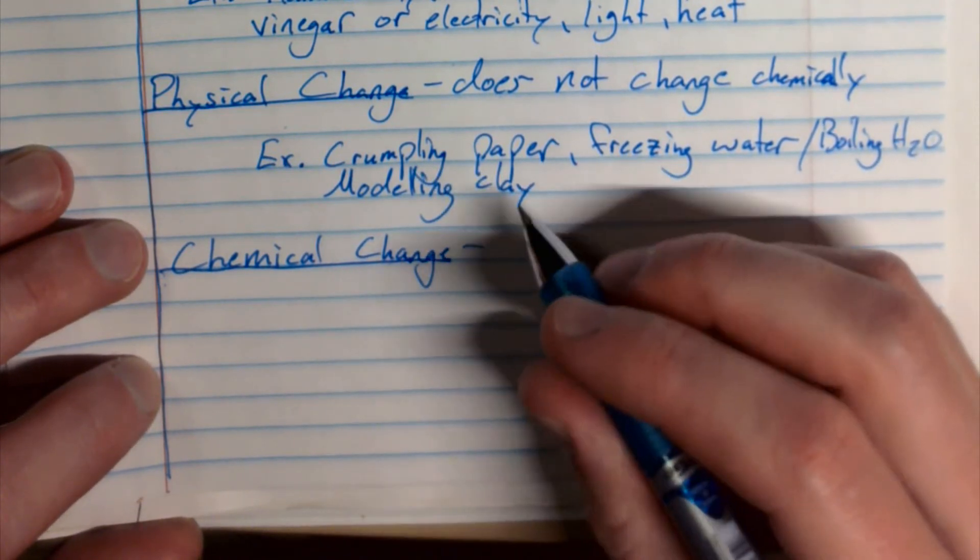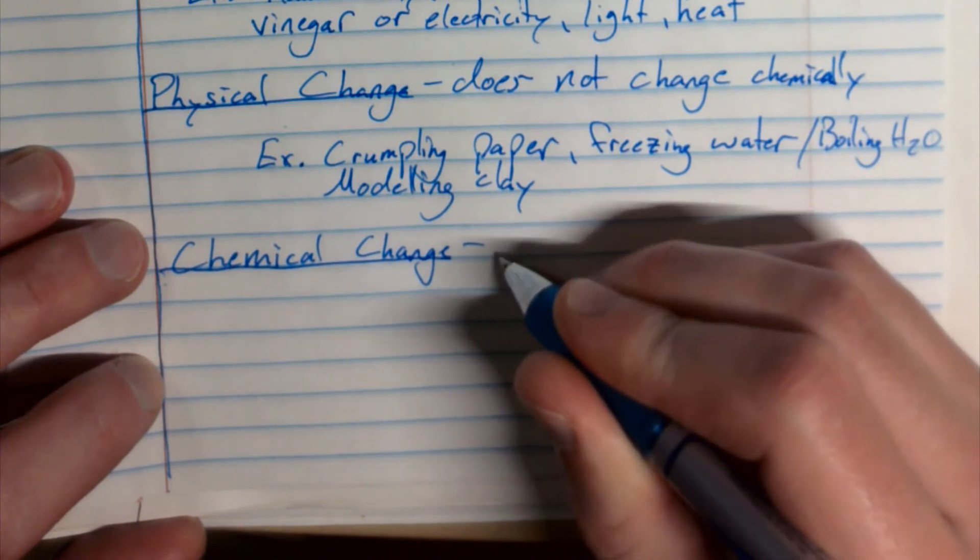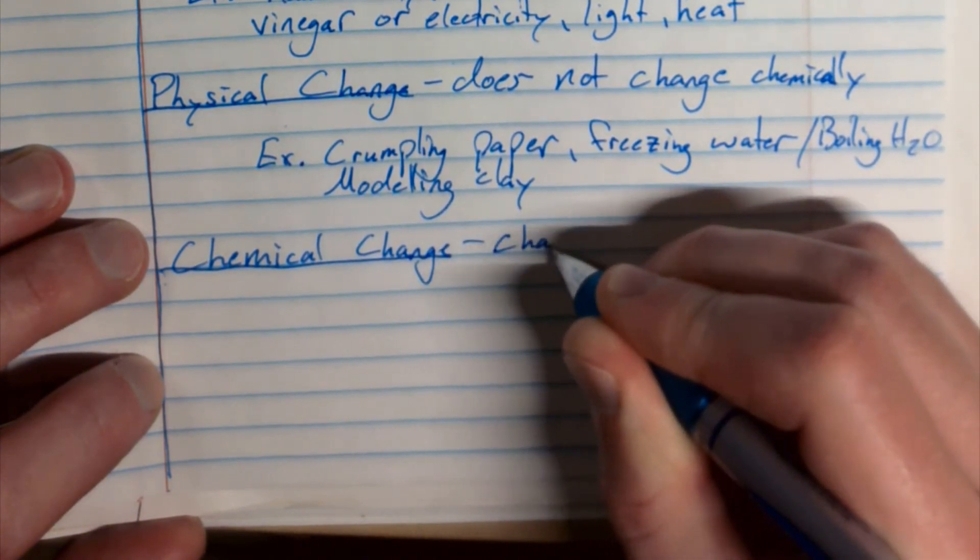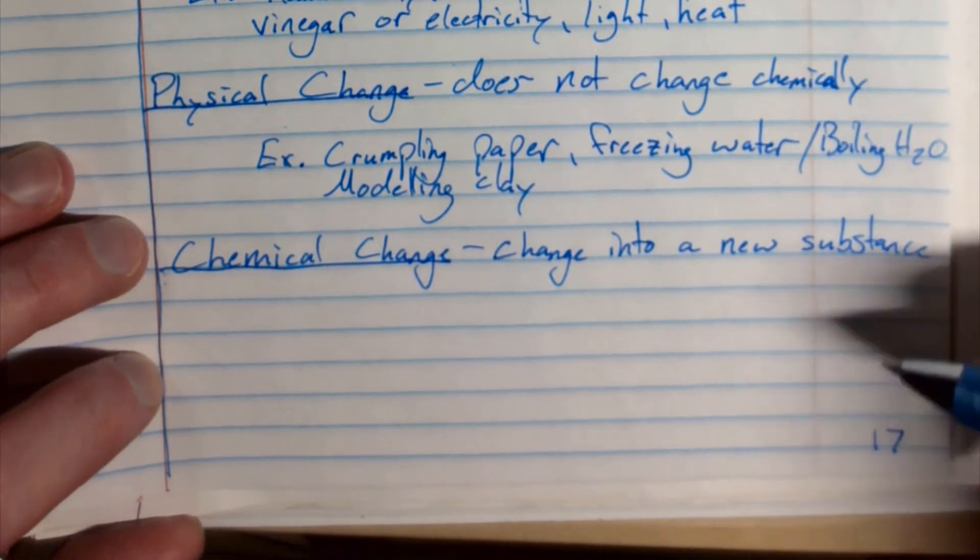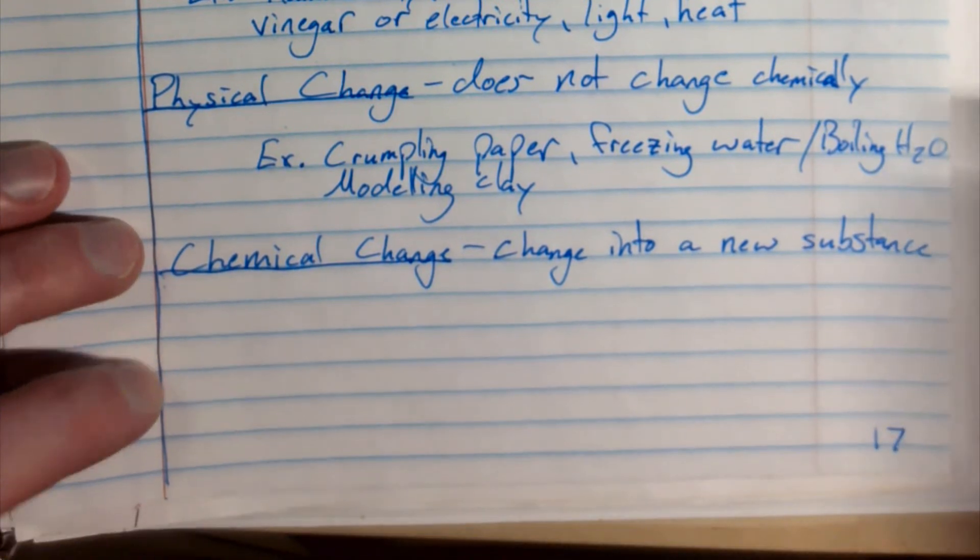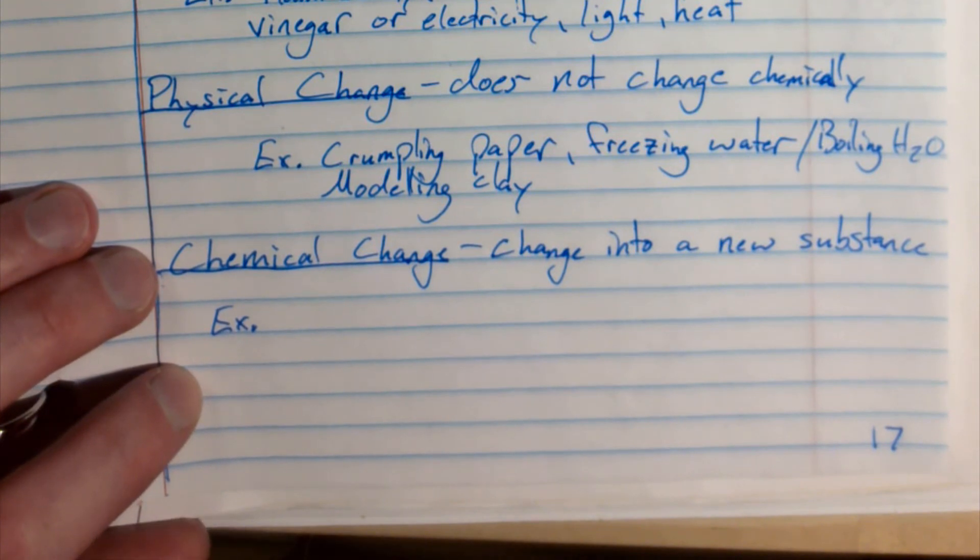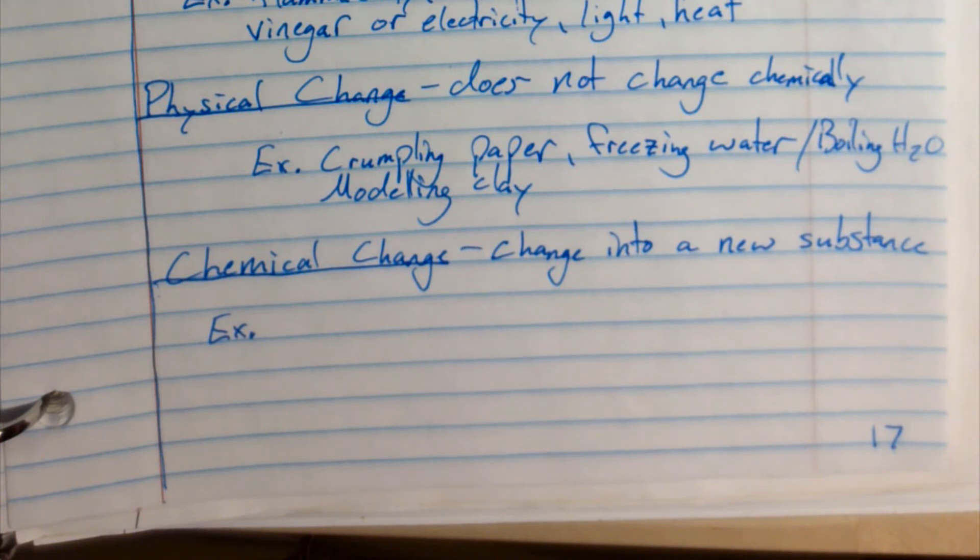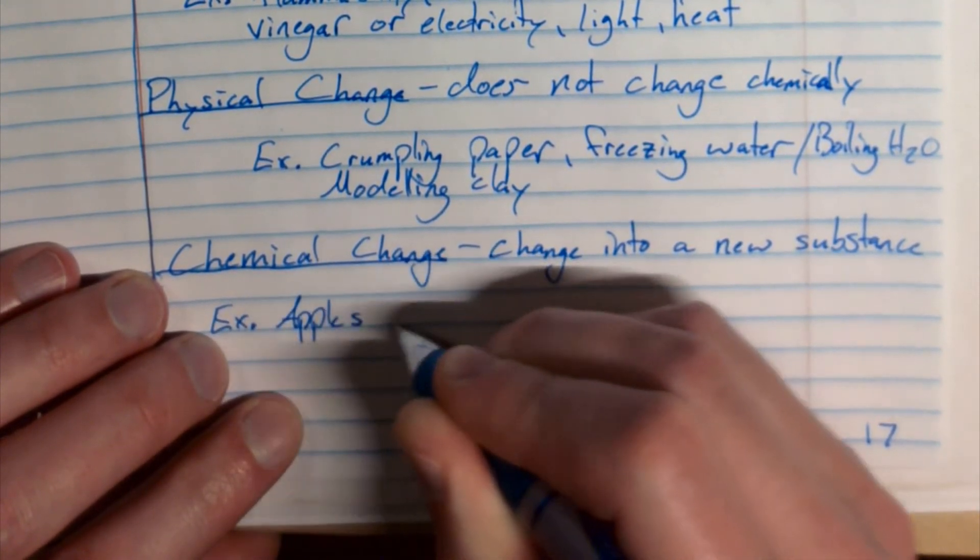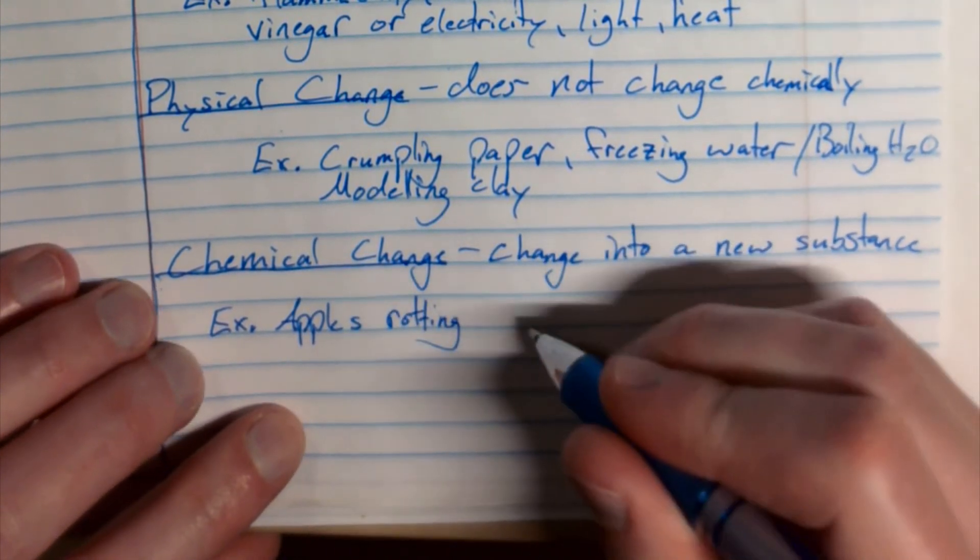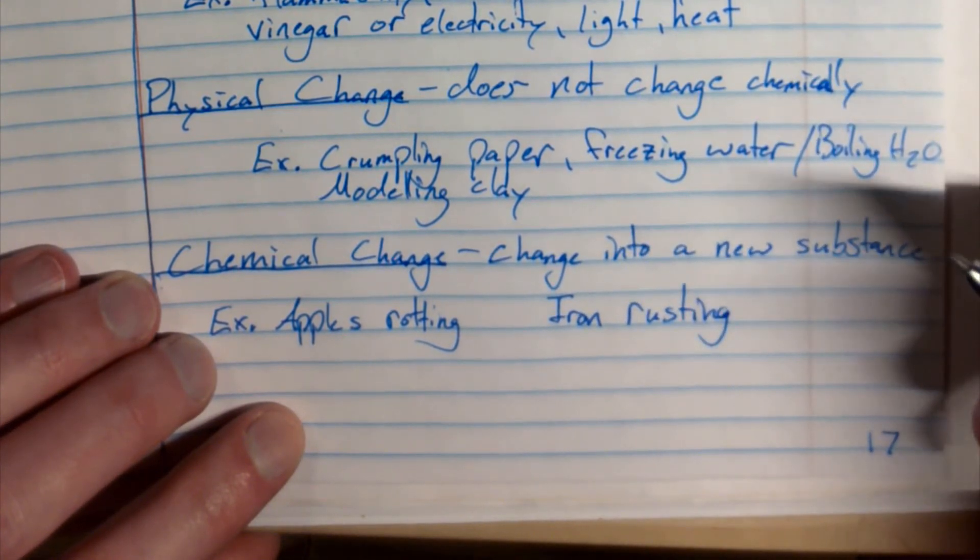For our definition, it's a change in the chemical makeup of the substance. I'm going to actually just change that to changes into a new substance. Because it's not the same thing anymore. It has changed chemically. Some examples, we could do apples rotting or iron rusting.